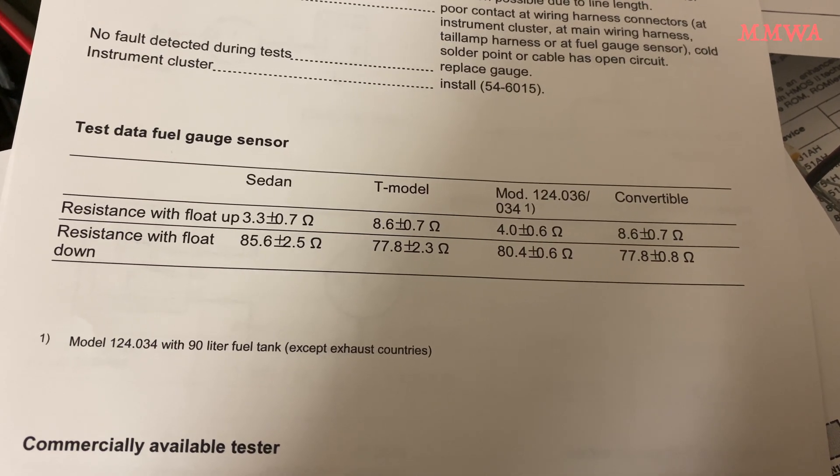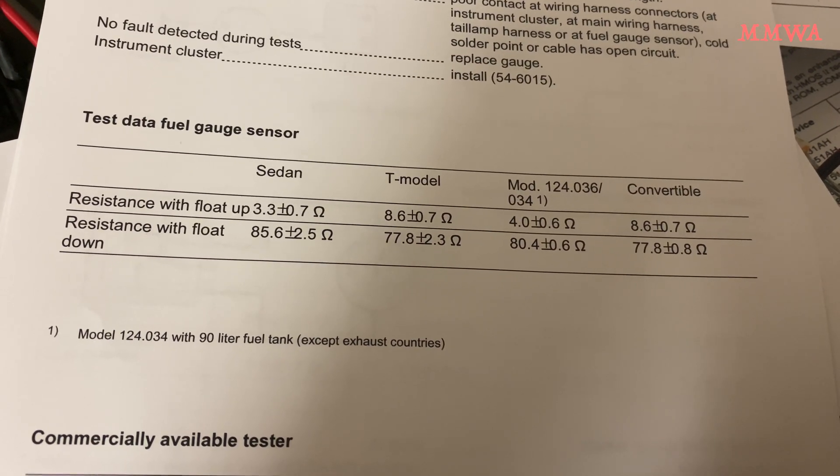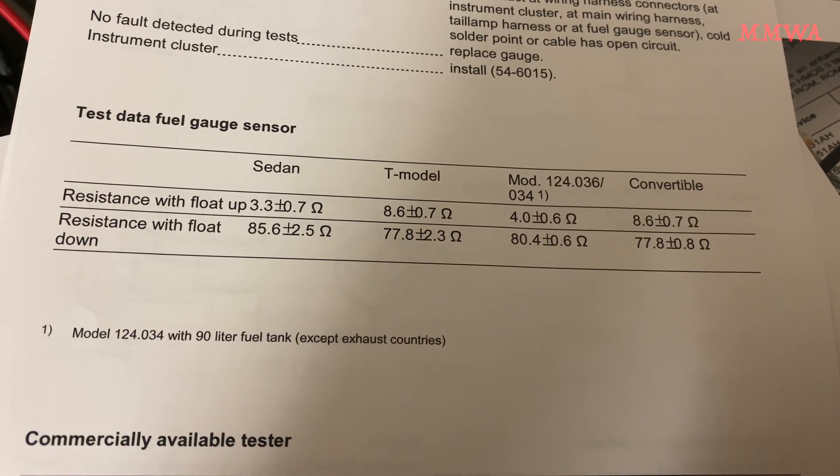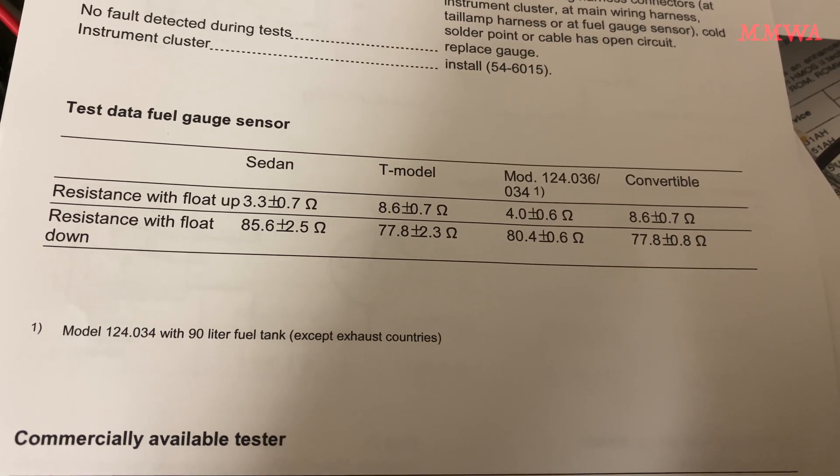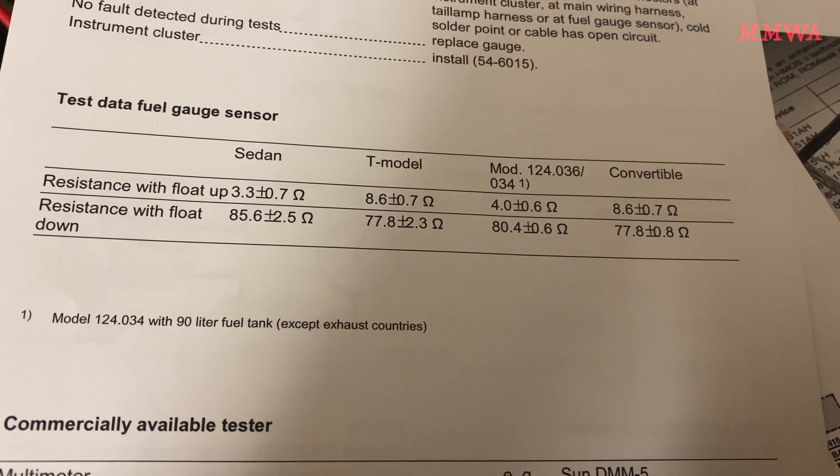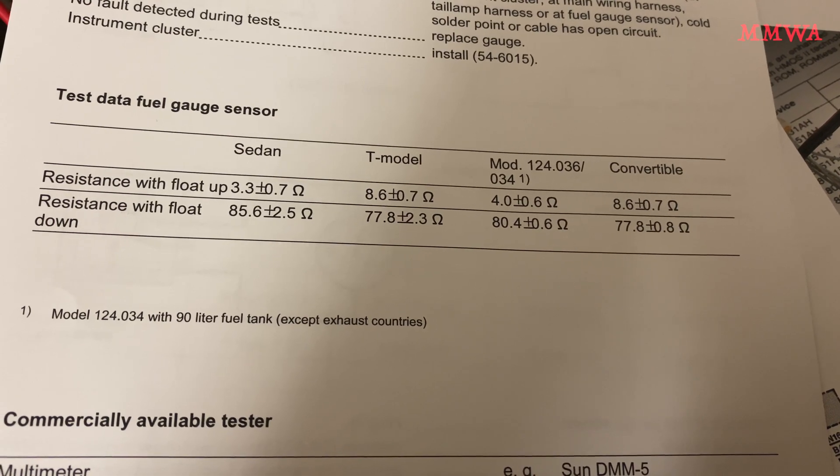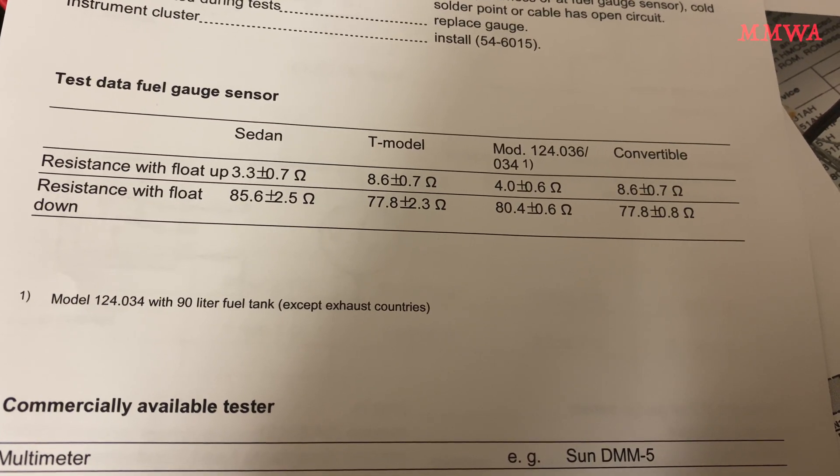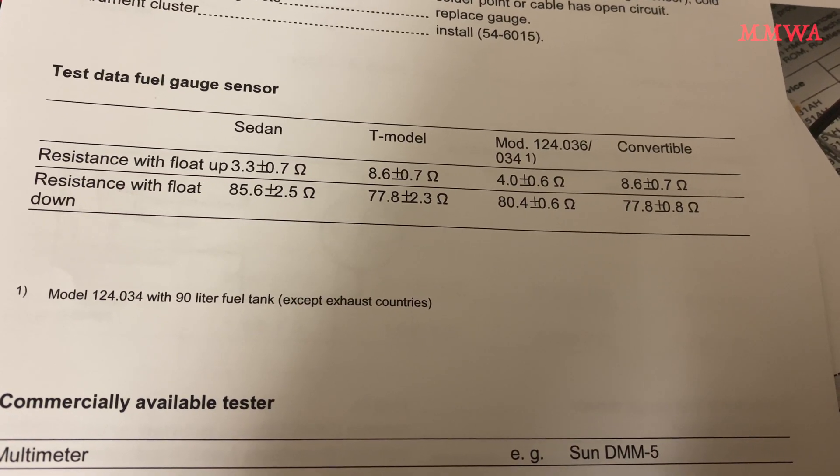The difference between the sedan and the 500E isn't that great. You don't notice much difference on the gauge when you're simulating these figures, and they do actually have a different length sender anyway because it's obviously a deeper tank to hold 90 liters. But the biggest difference comes about when you are swapping a cluster from a sedan to a T-model or convertible, because you can see the full position is 3.3 ohms versus 8.6, and empty is 85.6 versus 77.8. Not much difference in the full position,